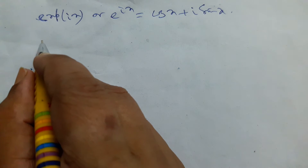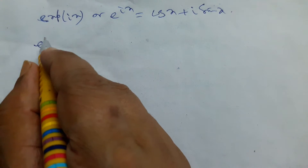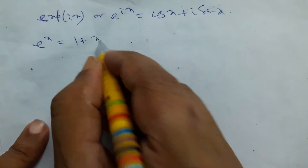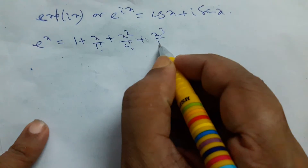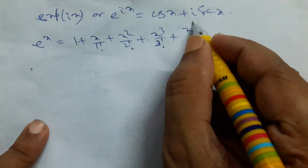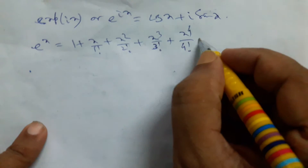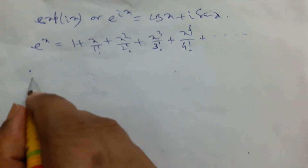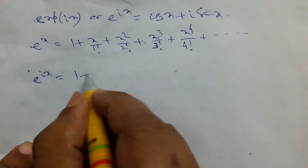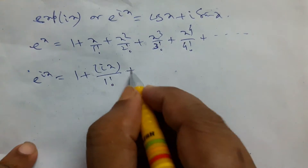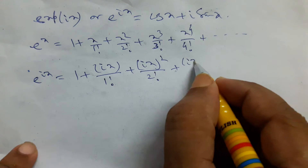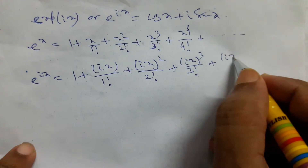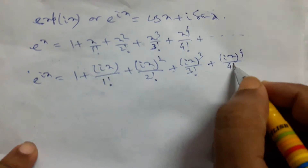To prove it, we first consider the Taylor expansion: e to the power x equals 1 plus x plus x squared by 2 factorial plus x cubed by 3 factorial plus x to the power 4 by 4 factorial, and so on. If we replace x by ix, then e to the power ix equals 1 plus ix by 1 factorial plus ix whole square by 2 factorial plus ix whole cube by 3 factorial plus ix whole to the power 4 by 4 factorial, and so on.